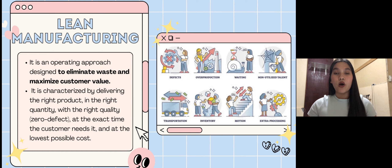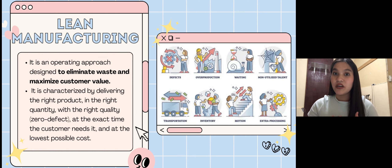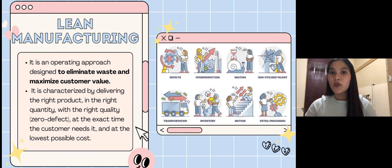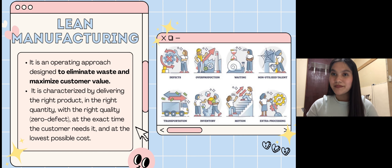Lean manufacturing is an operating approach designed to eliminate waste and maximize customer value. It is characterized by delivering the right product in the right quantity with the right quality — zero defects — at the exact time that the customer needs it, at the lowest possible cost.